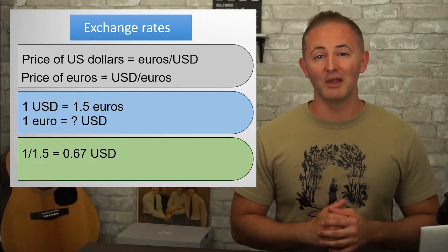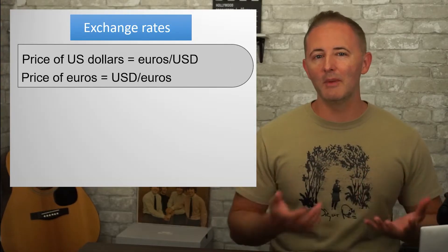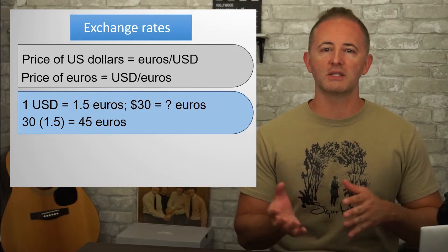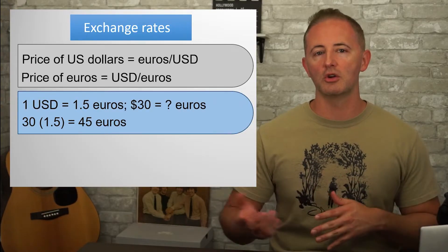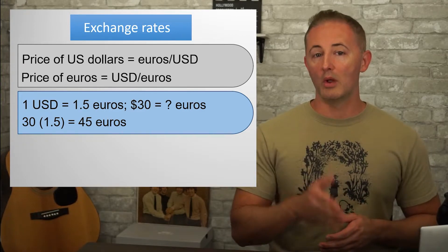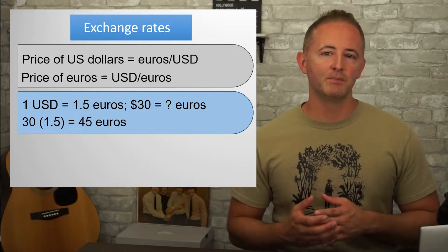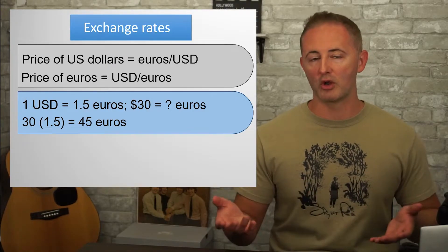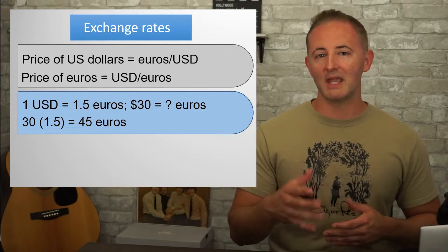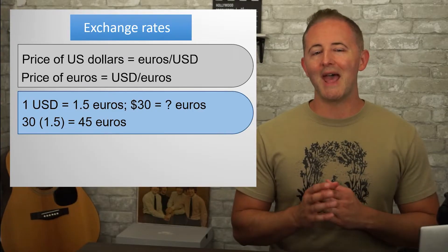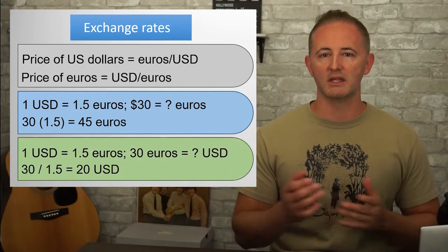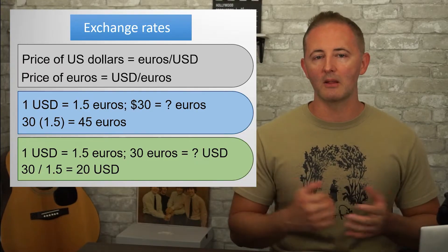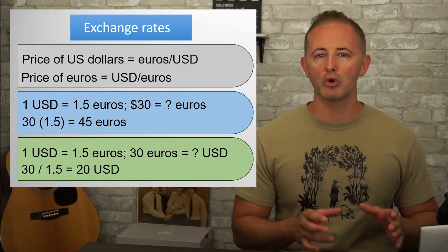And that's really all that there is to it. If a test question wanted to be a little bit more complicated, it could provide you with an exchange rate and then ask you how much something that costs $30 would cost in euros. So keeping the same exchange rate, $1 is equal to 1.5 euros, so something that costs $30 would be 30 times 1.5, which equals 45 euros. Or, staying at the same exchange rate, suppose it asked how much something that costs 30 euros would cost in dollars. This time we would do 30 divided by 1.5, which equals $20. Again, we're keeping our proportion the same.